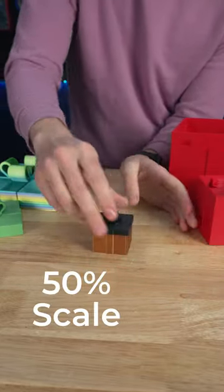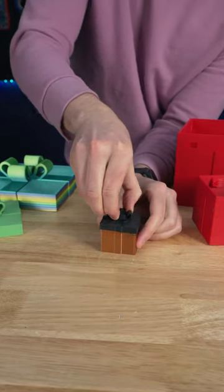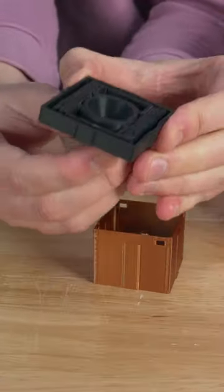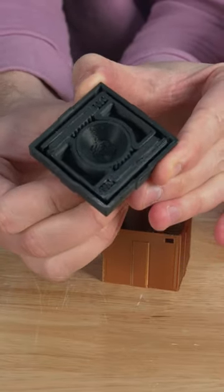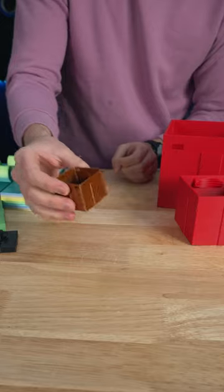Next up we've got 50% scale. This one uses a small twist to compress 3D printed springs and releases the top. And all that I could find to fit inside was a d20.